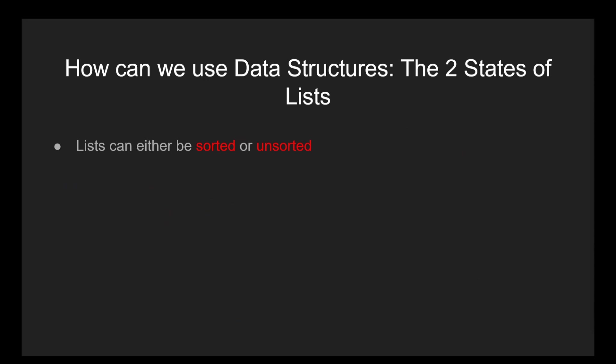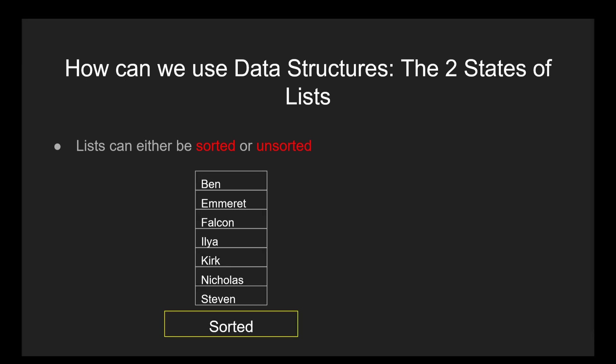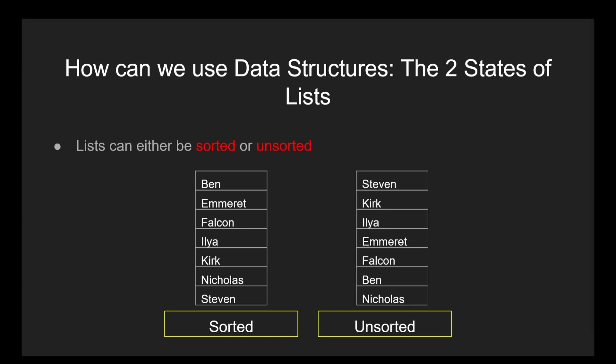Before we jump into different types of searching algorithms, we must discern between the two states that arrays or lists can be in: either sorted or unsorted. A sorted list of information is characterized by some sort of rankable value, whether that be a patient ID, credit card number, or even alphabetical values like usernames or legal names. An unsorted list is just some random assortment of related information, not sorted by any particular order or reason.